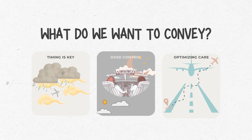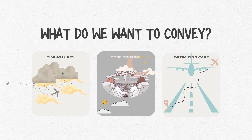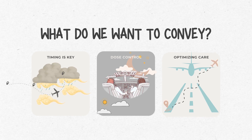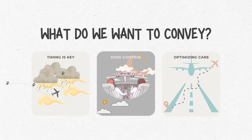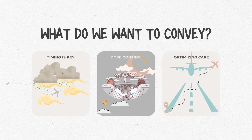Second, CSHT gives you precise dose control. Just like adjusting the plane's altitude, CSHT guides you in fine-tuning the drug dosage, making sure your patients are comfortable and safe throughout their medical journey. Third, CSHT helps optimize care — ensuring that patients wake up when expected so you can plan their post-anesthesia care accordingly.